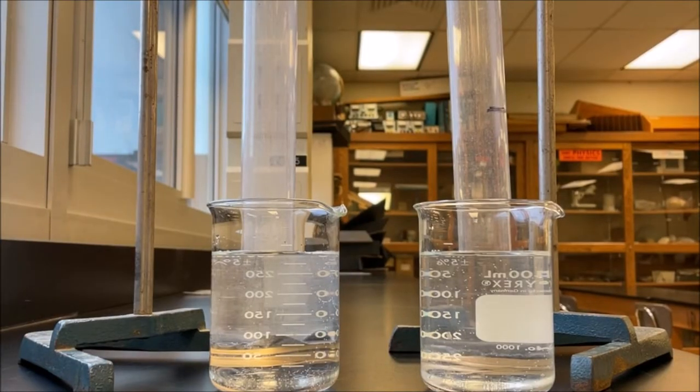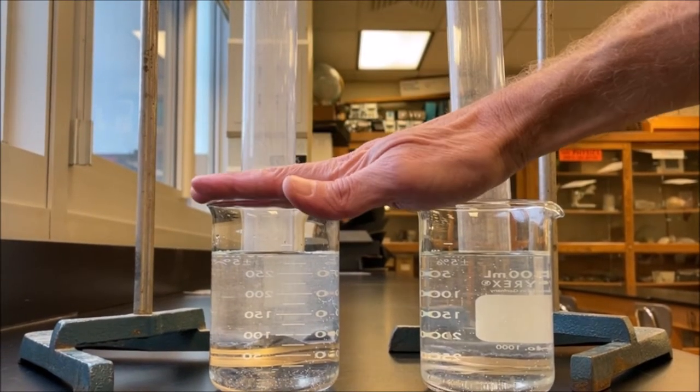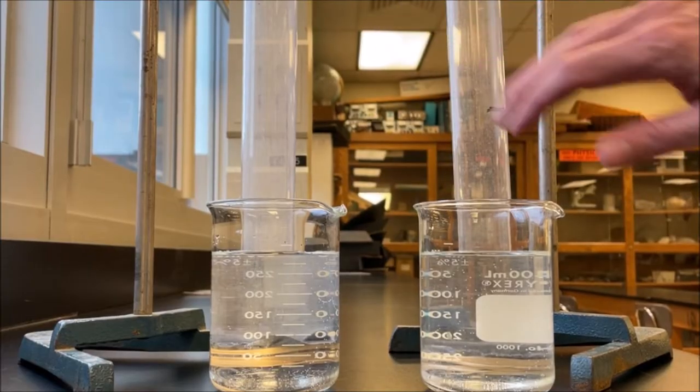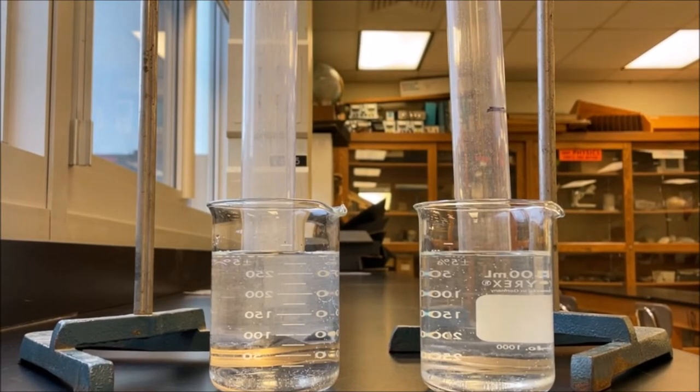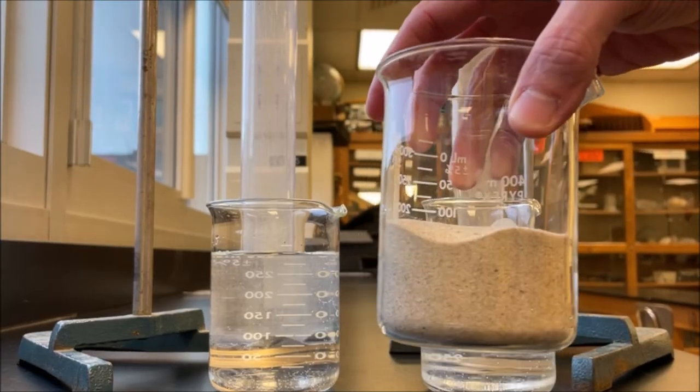So what we have here, I have 300 milliliters of water in each one of these beakers. They have these tubes and I'm going to put different size sediment, sand in one and small pebbles in the other. So on this side will be the smaller one. This is sand.